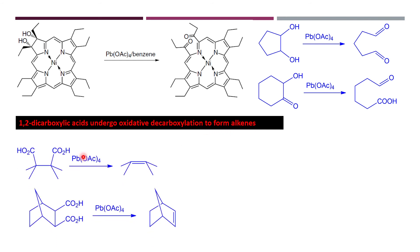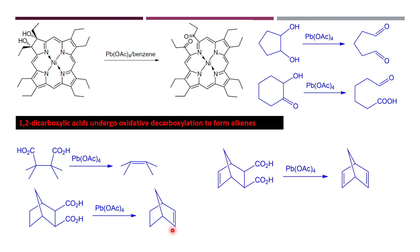1,2-Dicarboxylic acids undergo oxidative decarboxylation to form alkenes. When a 1,2-dicarboxylic acid is treated with lead tetraacetate, decarboxylation occurs via a radical pathway, leading to formation of an alkene. A similar mechanism applies in further examples, also giving alkenes with loss of the carboxylate groups.